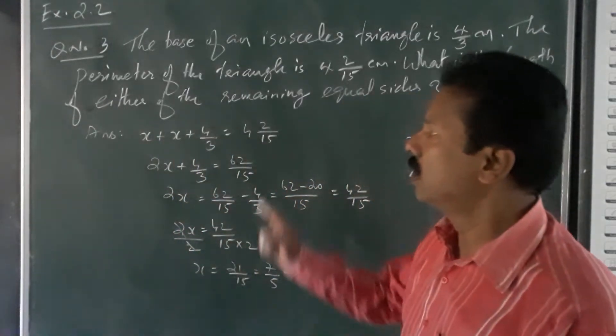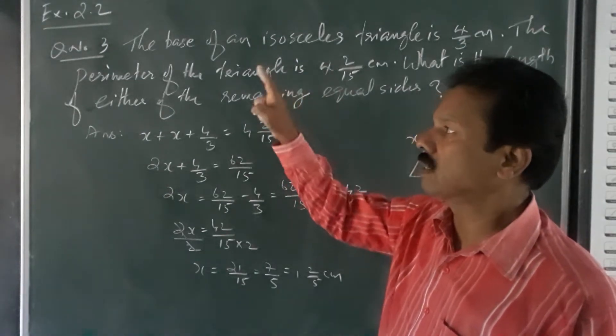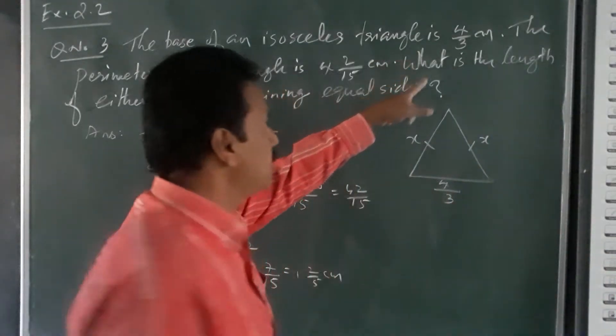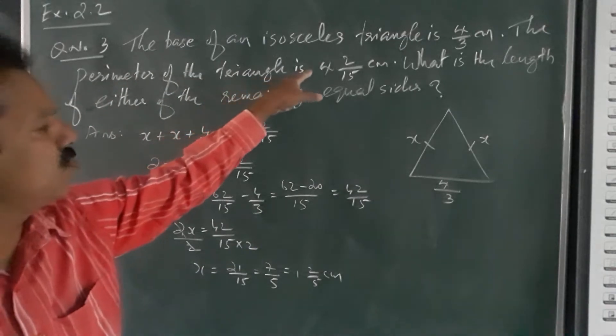Hello class 8 students, today you are going to solve class 8 chapter 2 exercise 2 question number 3. The base of an isosceles triangle is 4 by 3 centimeter. The perimeter of the triangle is 4 and 2 by 15 centimeter.